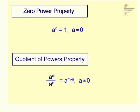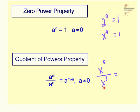Our Zero Power property: anytime that you're raising anything to the zero power it will always equal 1. So 2 to the zero power equals 1, x to the zero power equals 1. Quotient of Powers property: if you're dividing the same base — you can see we have a base of a and a base of a — you're going to combine those into just one base of a, so you keep the same base but now you're going to subtract your exponents. For example, if you have x to the fifth over x cubed, we notice we have a base of x and a base of x, so we keep our base of x and subtract the exponents: 5 minus 3 is 2, and we end up with x squared.